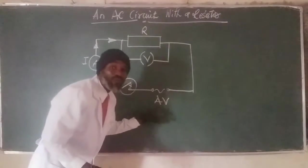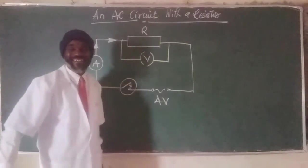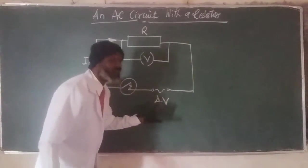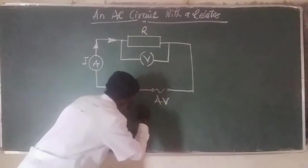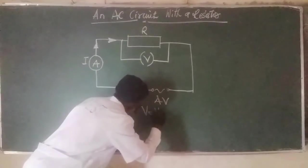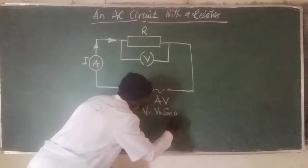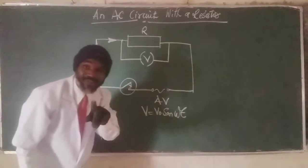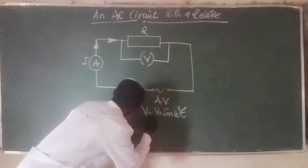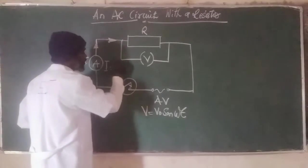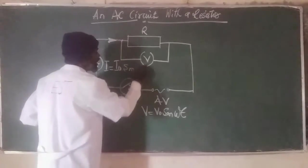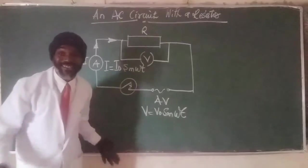This is an alternating voltage. And once you have an alternating voltage, which is V equals V naught sine omega T, of course, it will generate an alternating current, which is I equals I naught sine omega T. So that is it.